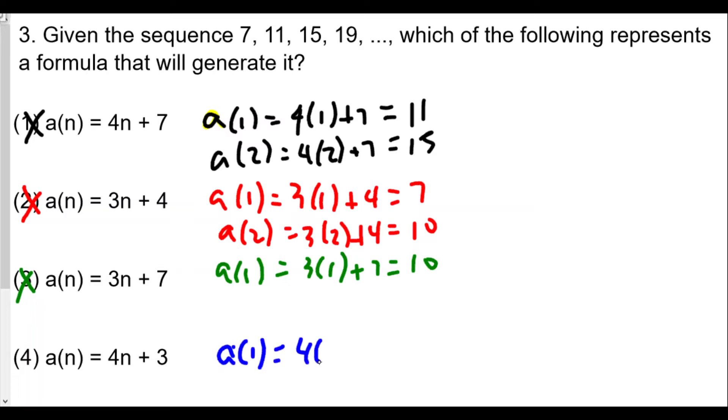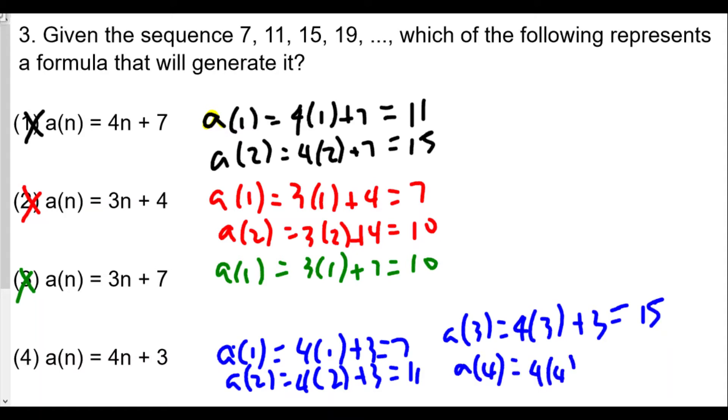A1 is going to be 4 times 1 plus 3 equals 7. That's good. A2 is going to be 4 times 2 plus 3, that's 11. Good. A3 is going to be 4 times 3 plus 3, 12 plus 3 is 15. And A4 is 4 times 4 plus 3 is 19. So we have 7, 11, 15, and 19, so it must be choice 4.